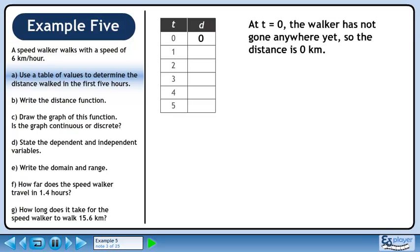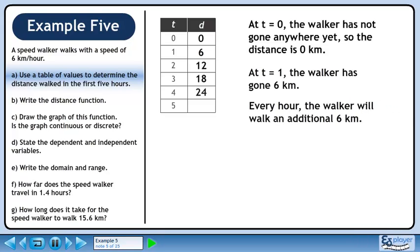At time equals 0, the walker has not gone anywhere yet, so the distance is 0 km. At time equals 1 hour, the walker has gone 6 km. Every hour, the walker will walk an additional 6 km.